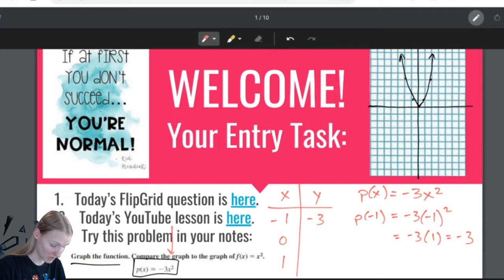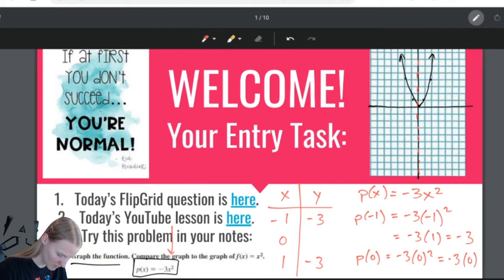We're gonna do p of negative 1 is negative 3 times negative 1 squared, which is negative 3 times 1, which is negative 3. Remember, our axis of symmetry tells me that this is also gonna be negative 3. No question about it, because they're on the same side of our axis of symmetry down the middle. So, now I have to do p of 0, negative 3 times 0 squared is 0. Beautiful. So, here's our first point.